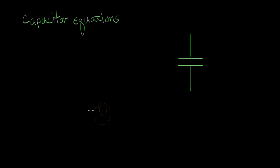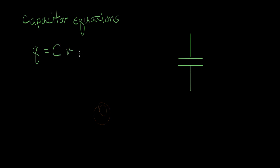We're going to talk about the equations that describe how a capacitor works, and then I'll give you an example of how these equations work. The basic equation of a capacitor says that the charge Q on a capacitor is equal to the capacitance value times the voltage across the capacitor.